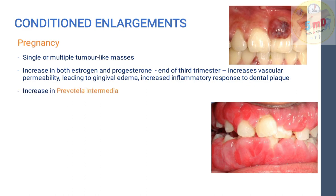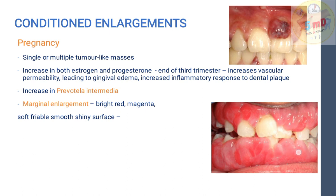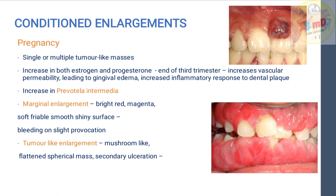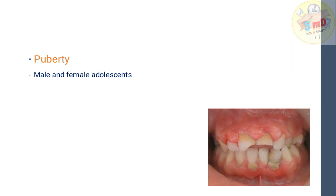Increased Prevotella intermedia is one of the main causes of pregnancy-induced gingival enlargement. The marginal enlargement is bright red or magenta in color, soft, friable, and has a smooth shiny surface. Bleeding on slight provocation is a common feature. Tumor-like or mushroom-like enlargement with a flattened spherical mass is also seen. Secondary ulceration can occur if the patient irritates the tissue, and it may cause pain.